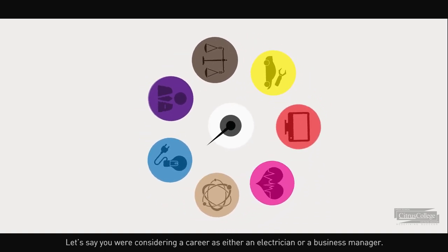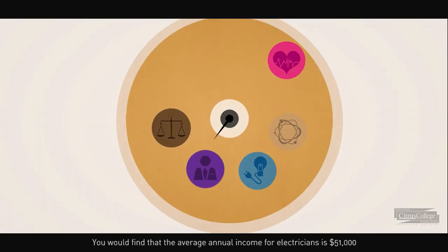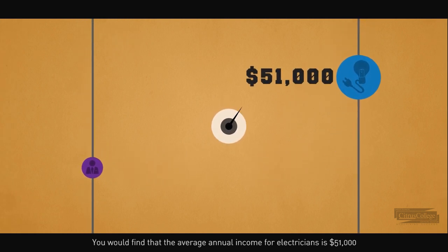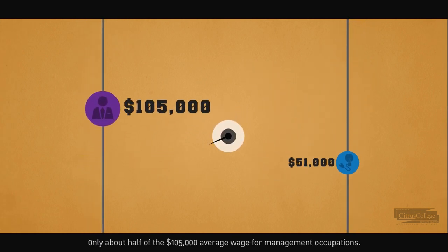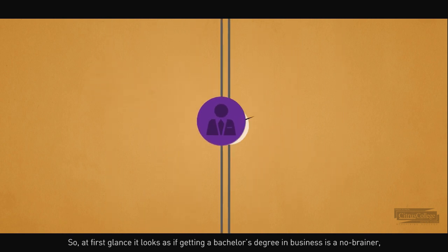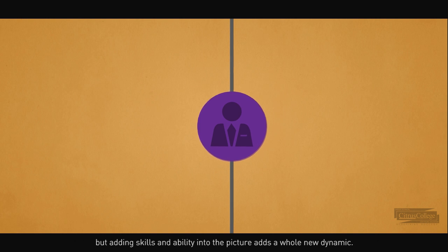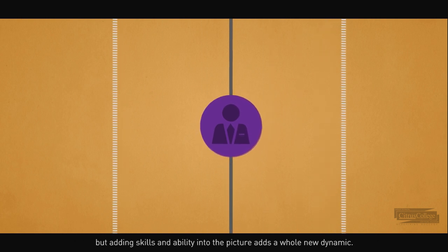Let's say you were considering a career as either an electrician or a business manager. You would find that the average annual income for electricians is $51,000, only about half of the $105,000 average wage for management occupations. So at first glance it looks as if getting a bachelor's degree in business is a no-brainer, but adding skills and ability into the picture adds a whole new dynamic.